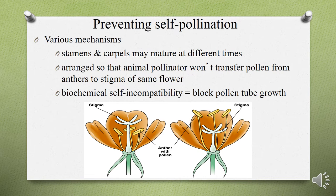Due to self-incompatibility of stigma and anther, cross-pollination is promoted. This concludes today's portion covering types of inflorescence, self and cross-pollination, and mechanisms facilitating self-pollination. Any questions can be asked during the interactive session on Wednesday at 12 o'clock.